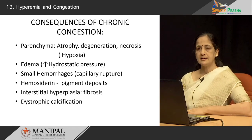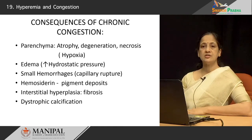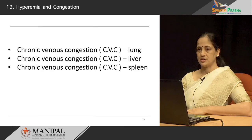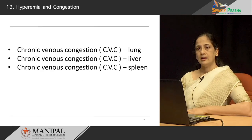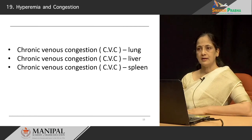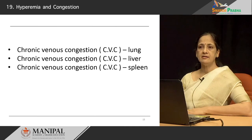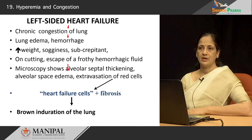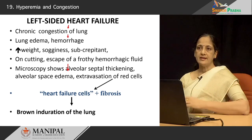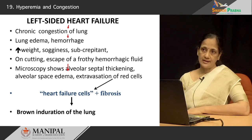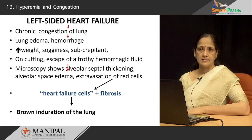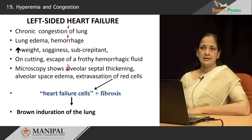Long-standing scars because of this fibrosis will further show dystrophic calcification. Chronic venous congestion is commonly seen in organs like the lung, liver, and spleen. Let us see some of the salient features of congestion in these organs. We said that if there is left-sided heart failure, there will be congestion of the lungs. So what do we see in the lungs?